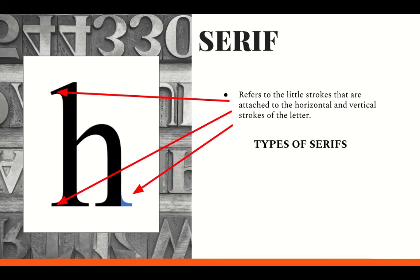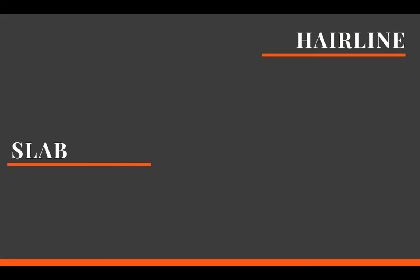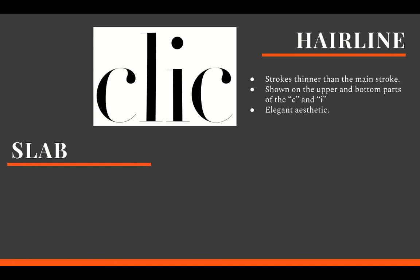The types of serifs can generally be categorized and described as hairline, square, wedged, or unbracketed and bracketed. Starting off with hairline serifs — these are much thinner than the main strokes. The thin hairline serifs are presented near the upper and bottom part of the letter C, and are also shown on the horizontal line, both on top and bottom of the letter L and I.